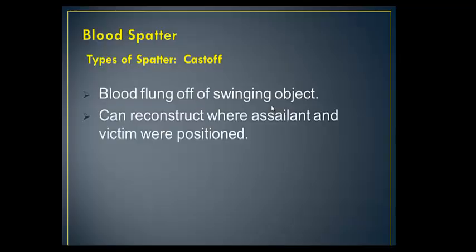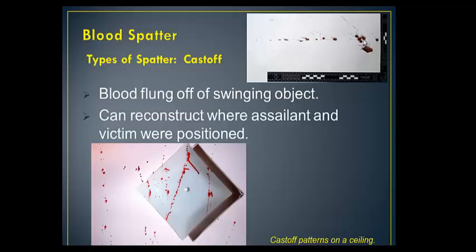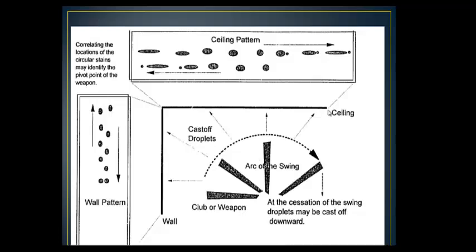What can also fall under medium velocity is any cast-off. As the object — the weapon — is swinging, that's going to make and radiate a pattern. Here are two examples: this is actually cast-off patterns on a ceiling, so the weapon was swung above the head. I can see the shape of the droplets — as the weapon moves up and over the head to the ceiling, I have on the angle more elliptical blood shapes. Directly overhead would be more round, and then moving across in that arc pattern it would become elliptical again. From those staining patterns, I can go directly to the point of origin.